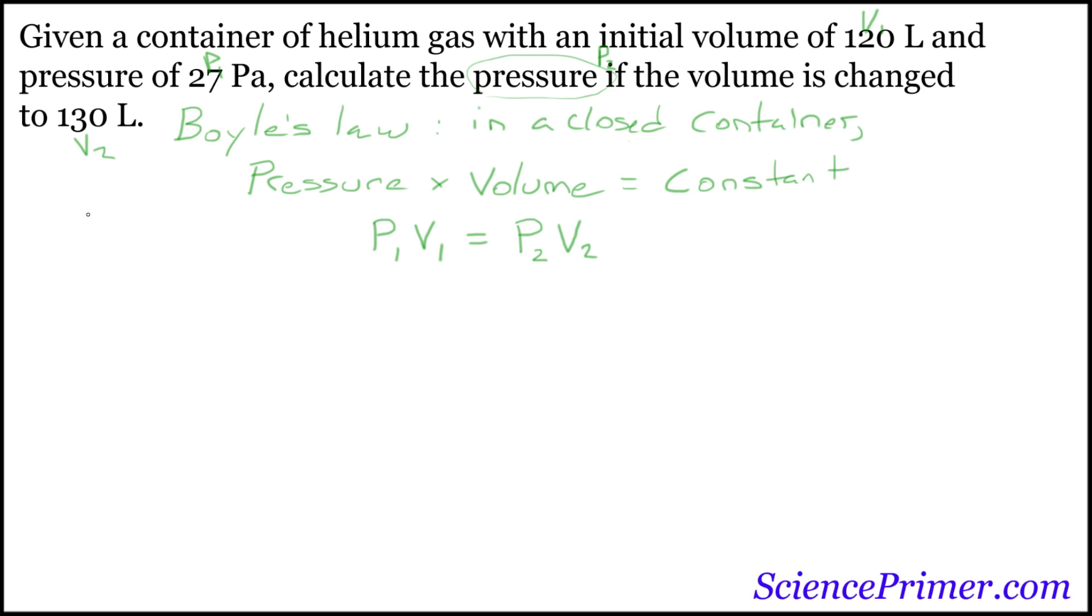To solve this question, we can go ahead and just plug these numbers in. For p1, we'll use 27 pascals. For v1, we will use 120 liters, and this equals p1, which is our unknown, so we'll call that x, times, I'm sorry, p2 times v2, which is 130 liters.